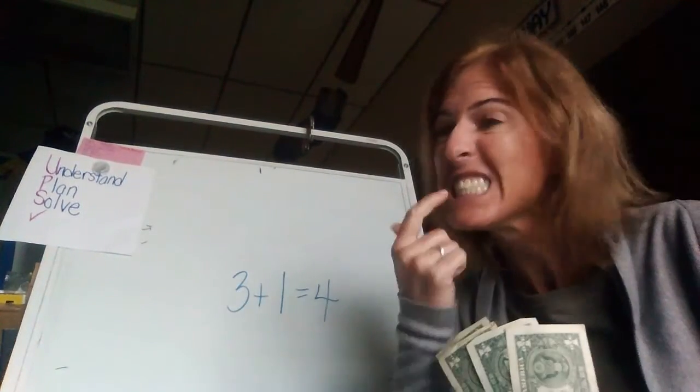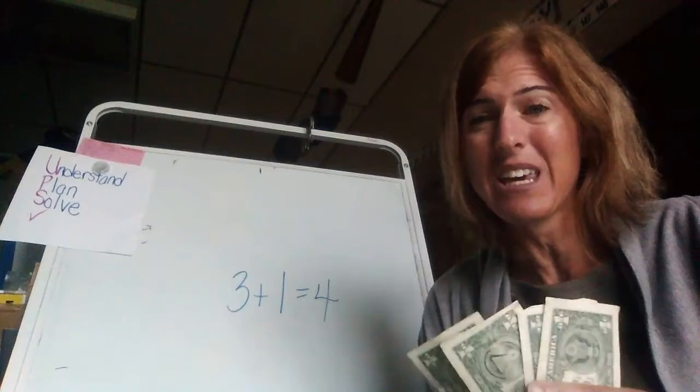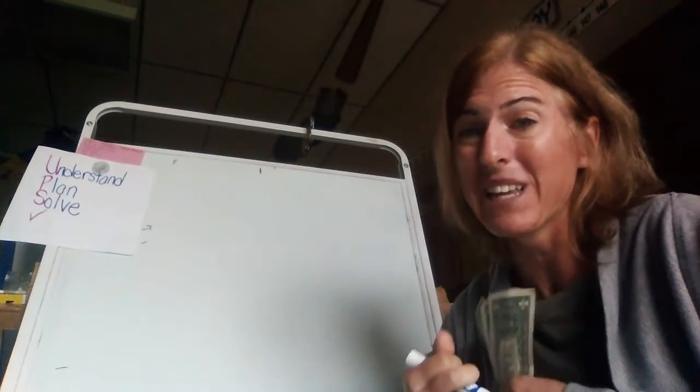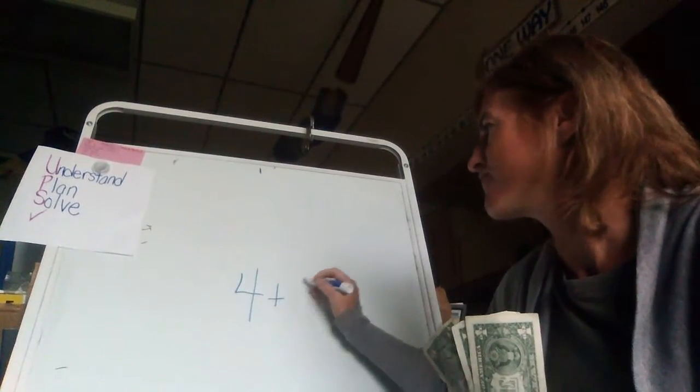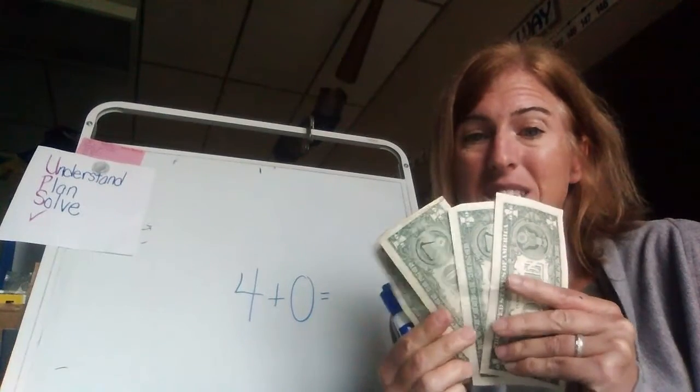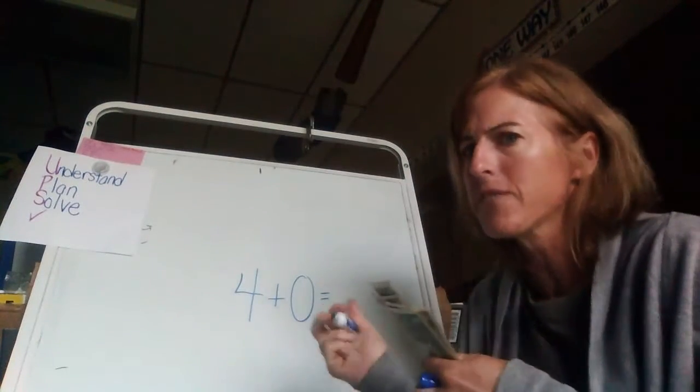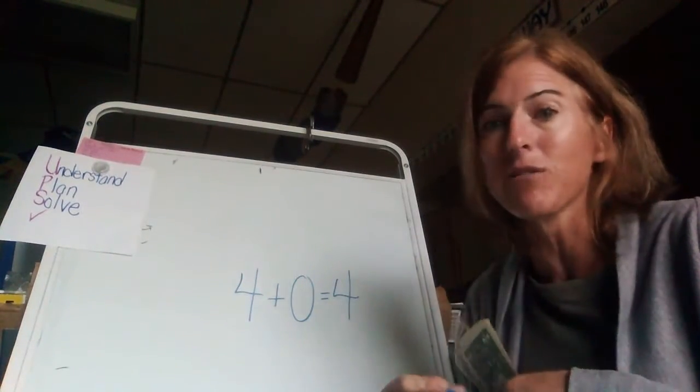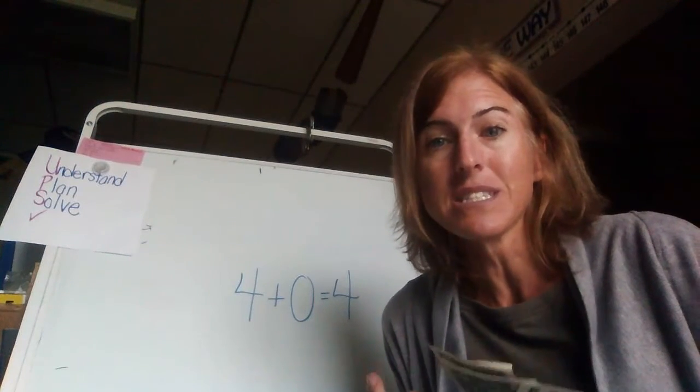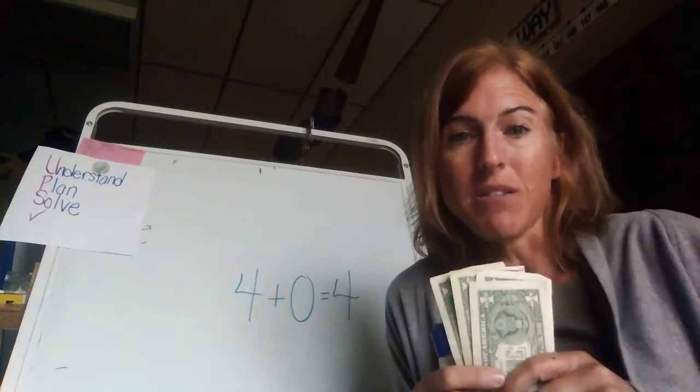All right. Any wiggly teeth? No, no wiggly teeth. So tonight, I'll have four dollars, but am I going to get any money from the Tooth Fairy? No. No money. And four plus zero. So every time that I add a zero to my numbers, what do I end up with? That's right. I end up with the same number I started with. So four plus zero is four.